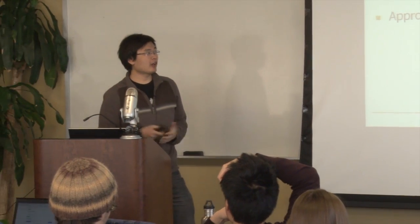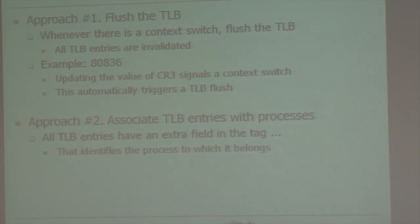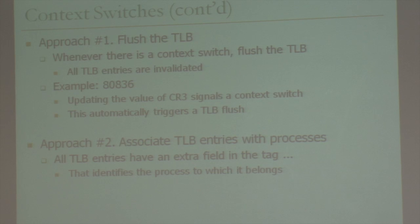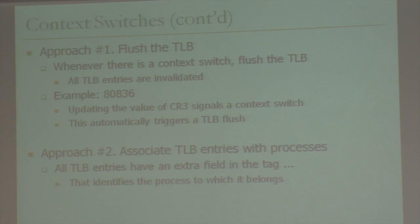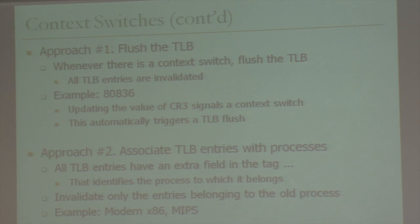Another solution which is less costly is to associate TLB entries with processes by adding an extra field — the process ID — to each TLB entry, identifying which process that entry belongs to. When there's a context switch from process X to process Y with the same VPN number, you check this field and see that the entry belongs to process X, not process Y. You then invalidate only that specific entry, not the entire TLB. This is done in modern x86 processors as well as MIPS processors.